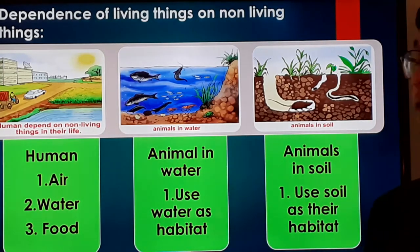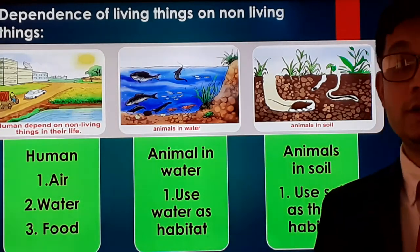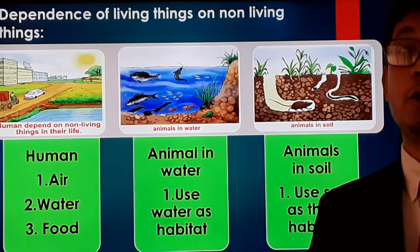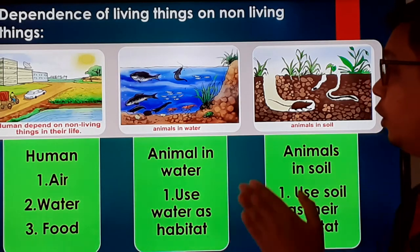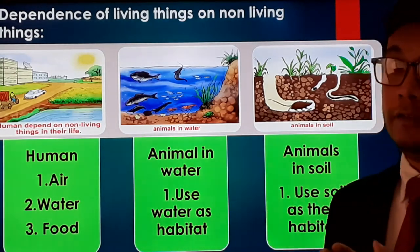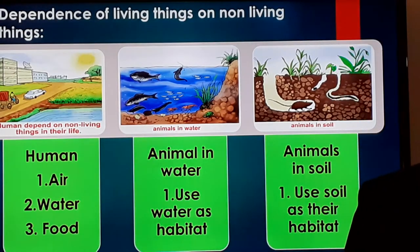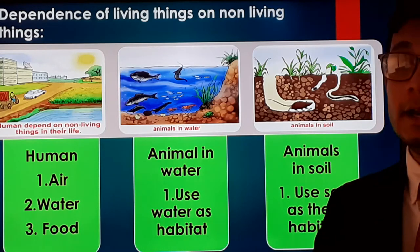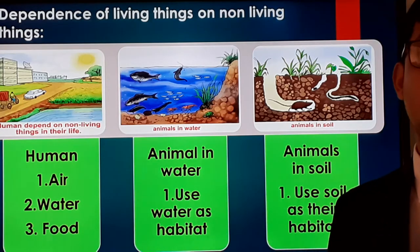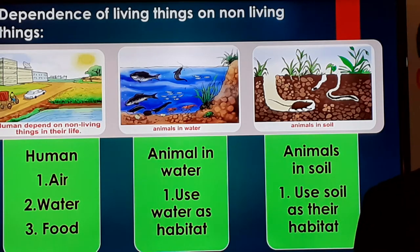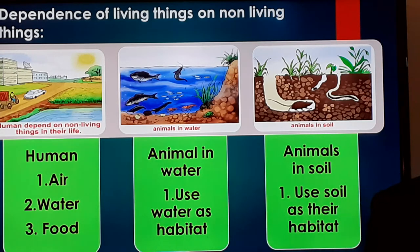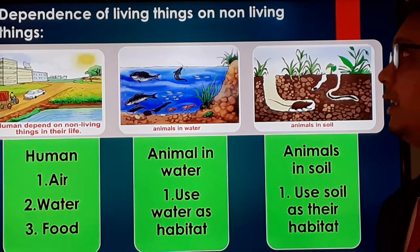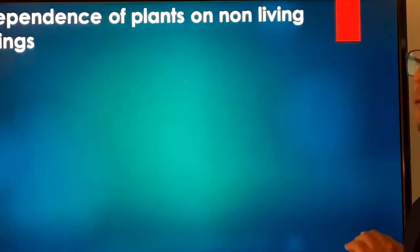Looking at fish: water is a non-living thing, but fish are living things. Without water, fish cannot survive — so fish depend on water, a non-living thing. Similarly, soil is a non-living thing and many animals live under the soil as their habitat. Without soil, many animals cannot survive. So animals, as living things, are hugely dependent on non-living things.